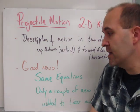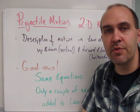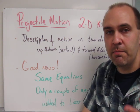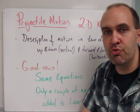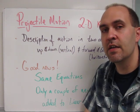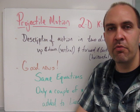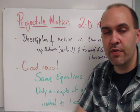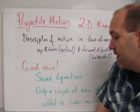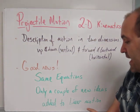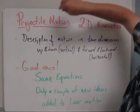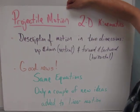The good news about this topic is that we're using the same equations that we did with linear motion. So the same five equations, the three basic ones and the two power tools and the acceleration due to gravity. If you weren't comfortable with them before, hopefully by the end of this you will be. And there are only a couple of new ideas that we need to add to linear motion.